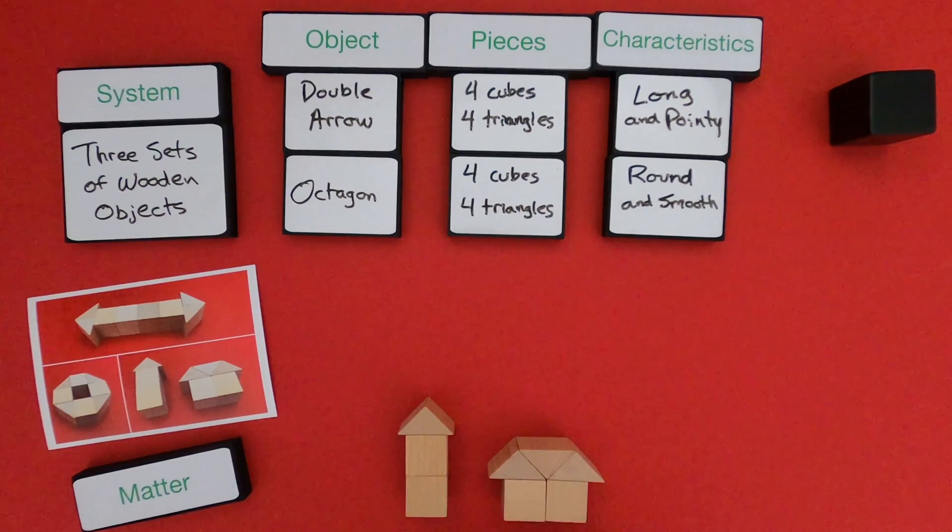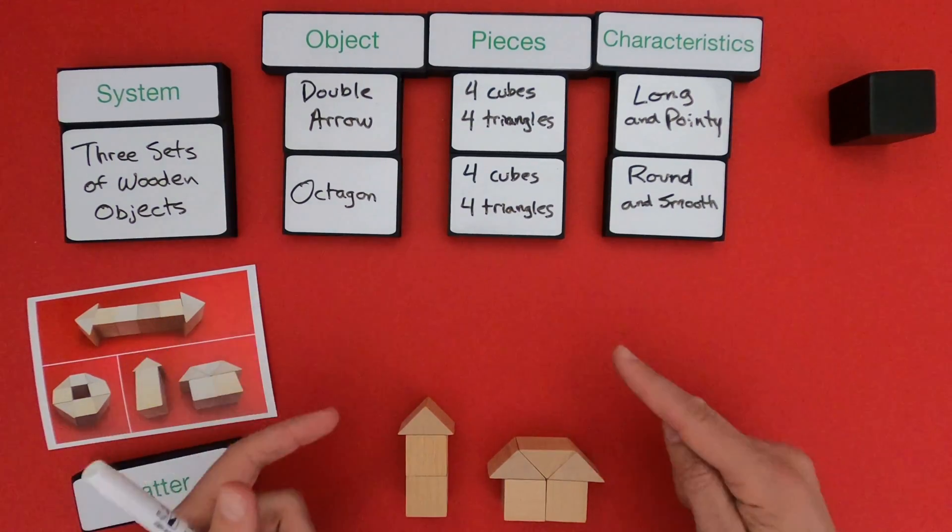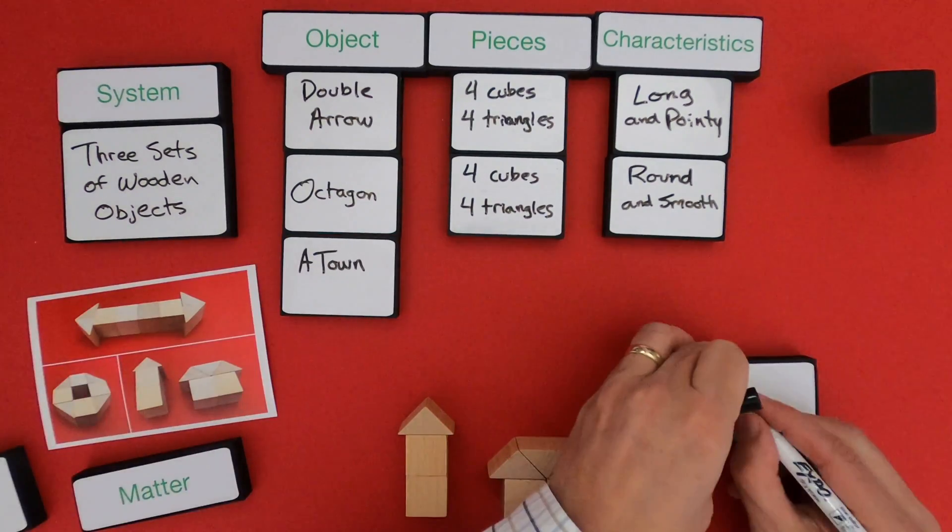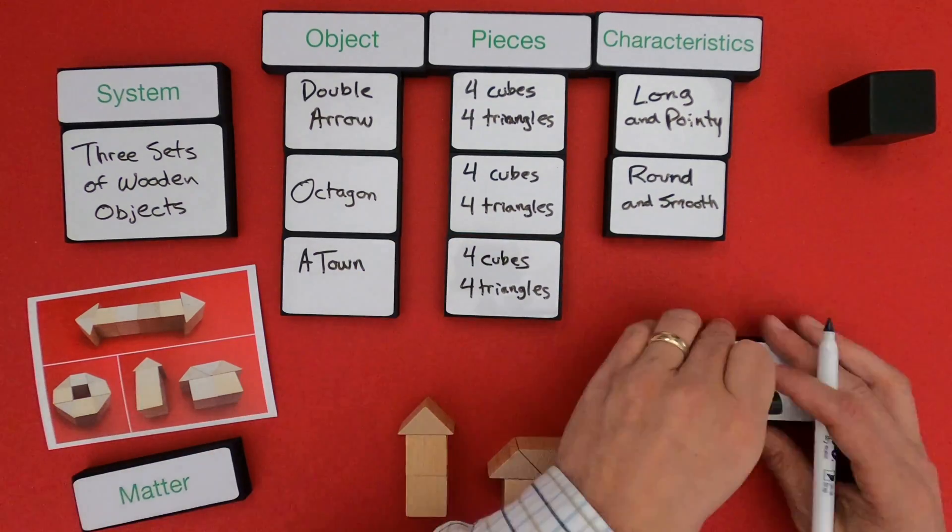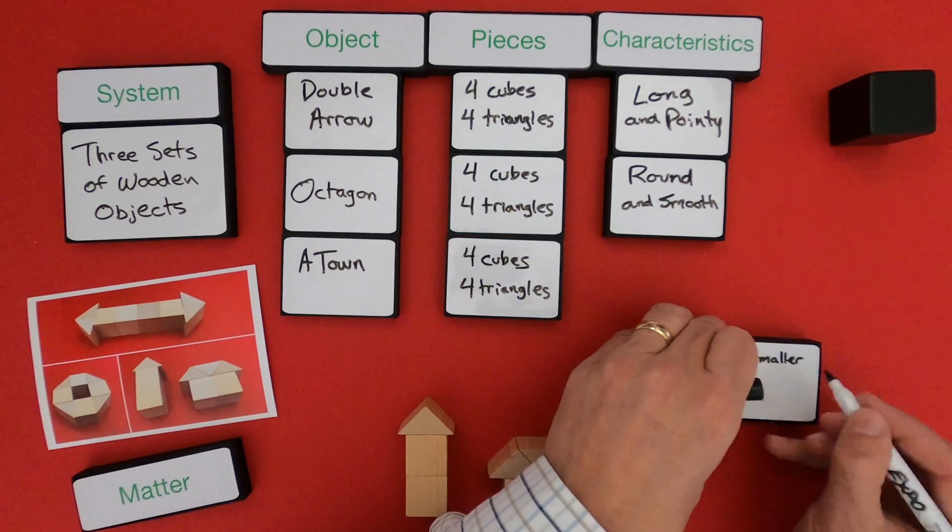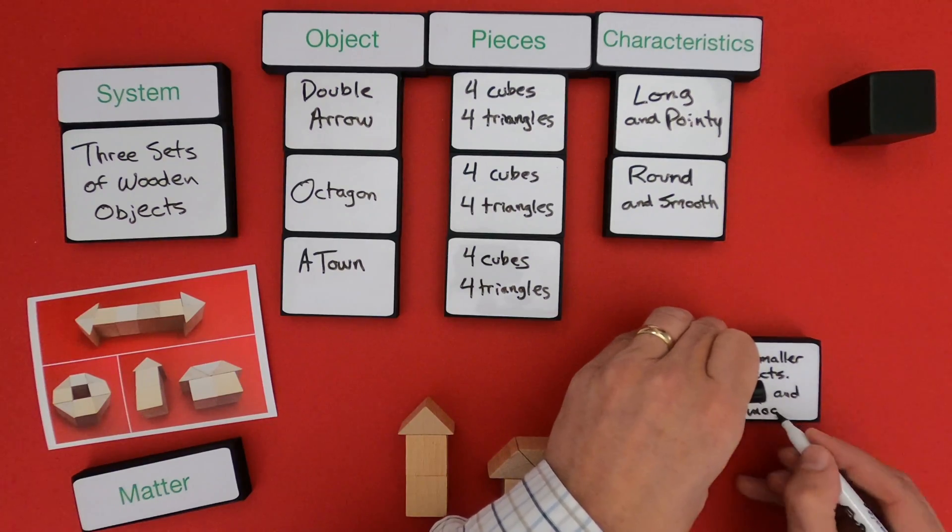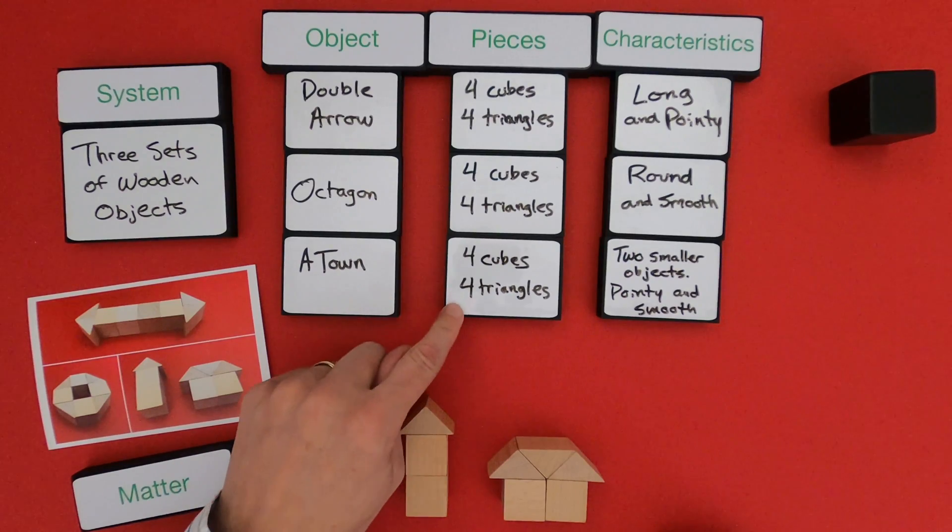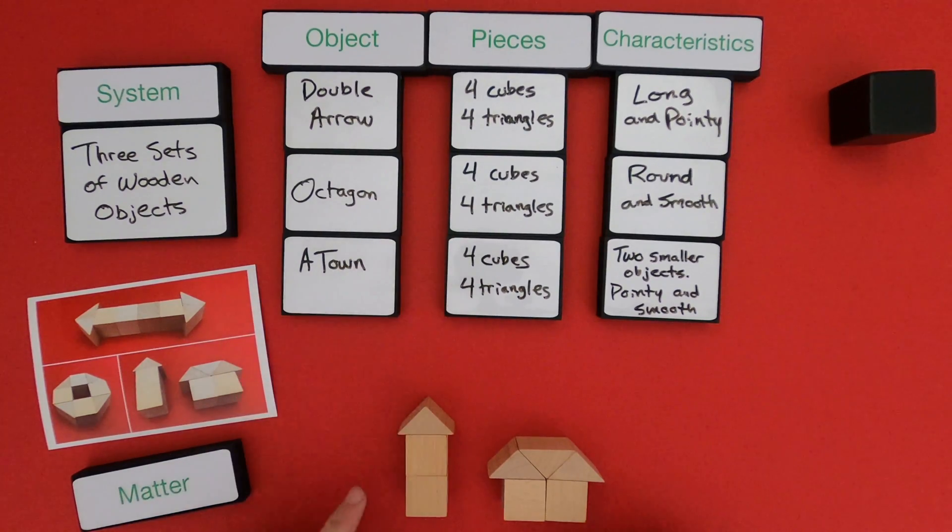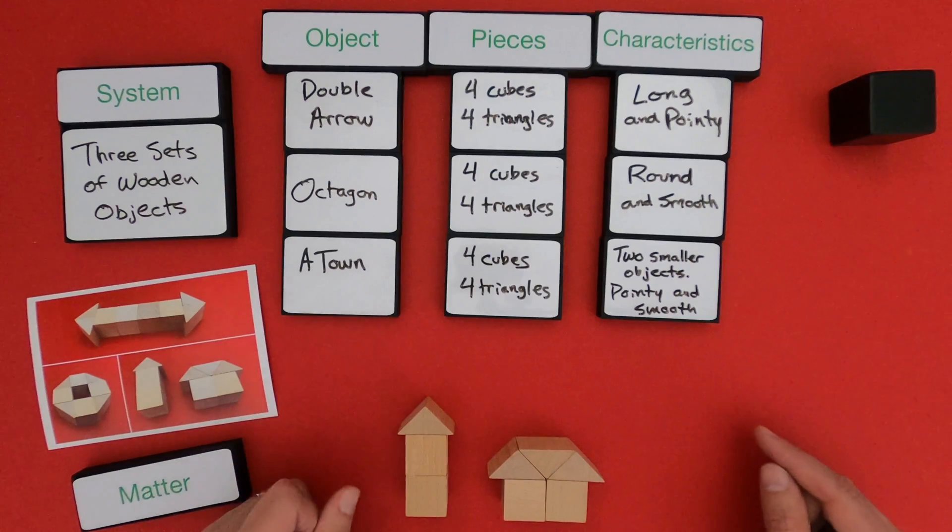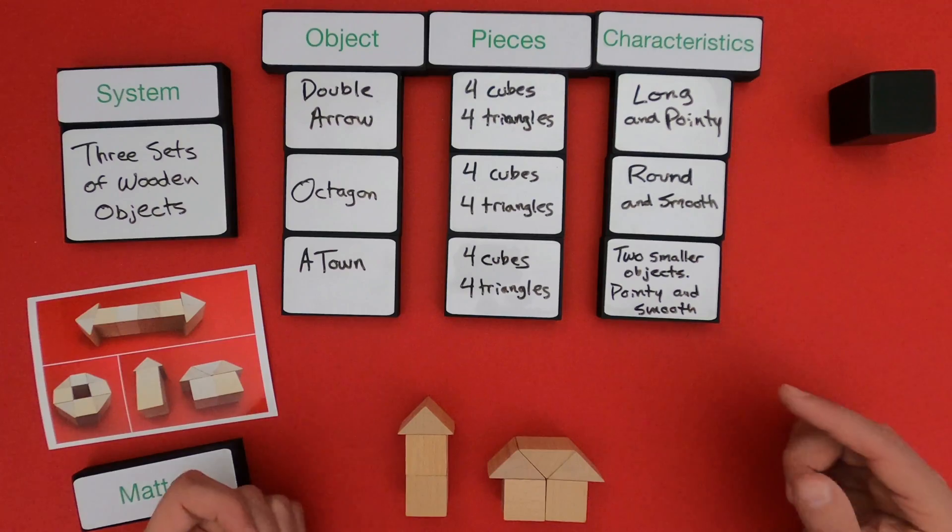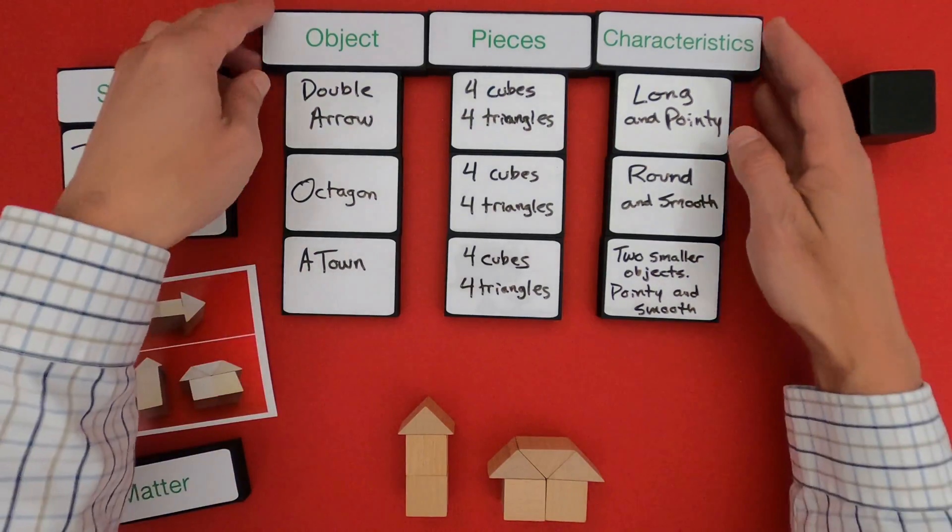Okay, for this final one, what I do is I have two objects here. It looks like a little town, so let me write down the object, the pieces, and the characteristics. Okay, as we look at the object, the town, it has the same number of pieces, four cubes and four triangles. What we see now is that in this big object, we have two smaller objects. We have two buildings, and one of them is pointy and one of them is smooth.